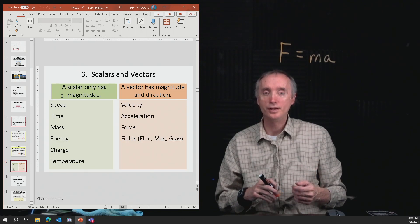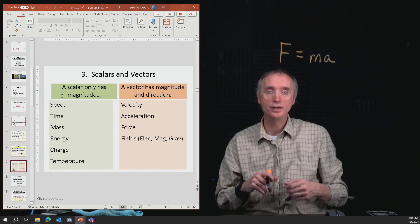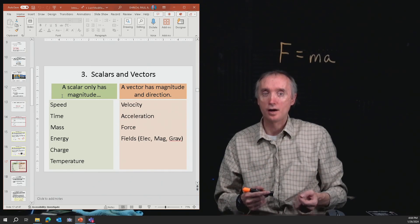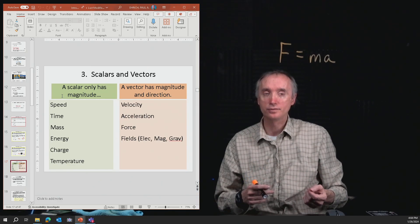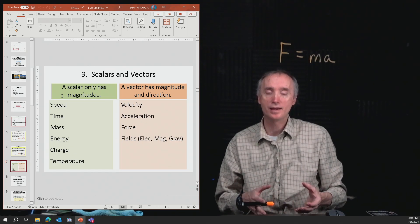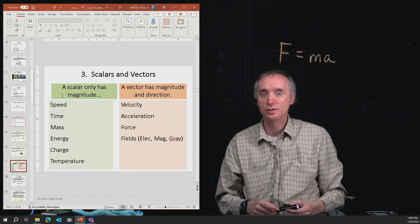A scalar only has a magnitude. It only has a number that goes with it. On the other hand, a vector tells you the magnitude of the quantity and the direction it's going in.